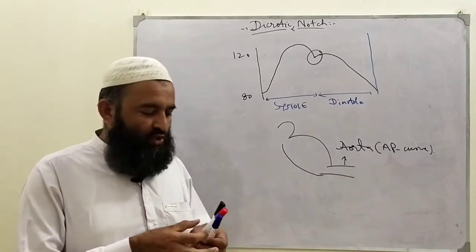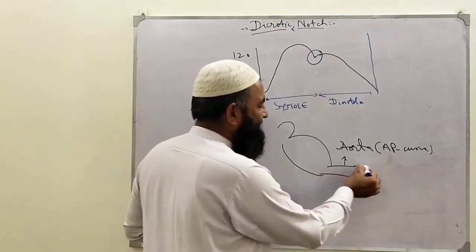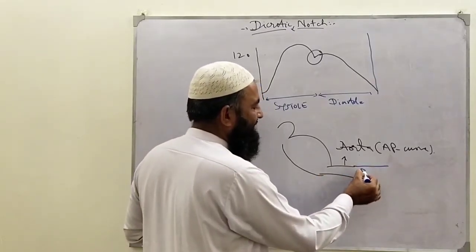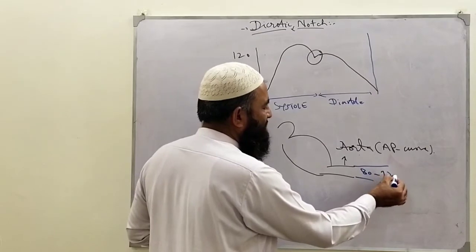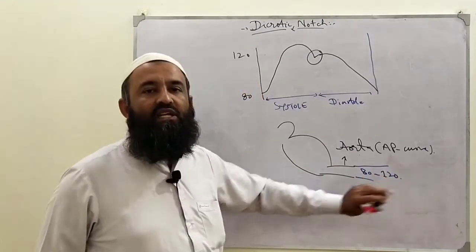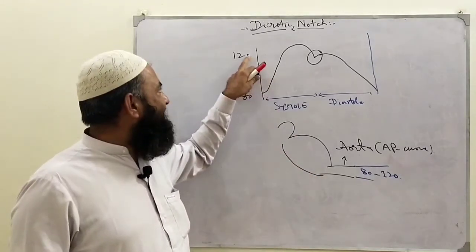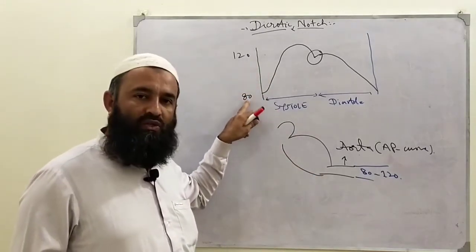Inside the aorta, the pressure, which is basically arterial pressure, during the whole cardiac cycle occurs between 80 to 120 mmHg. Minimum pressure is 80, maximum pressure is 120. We may graphically represent that as 120 and 80 here.